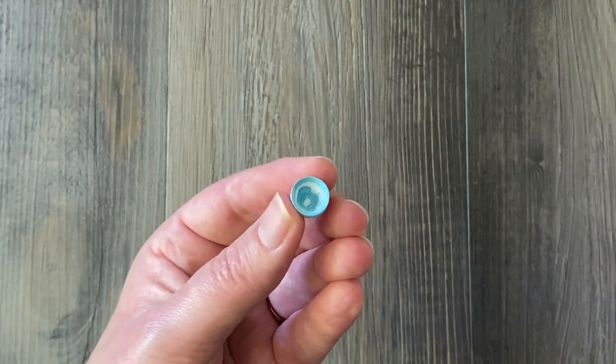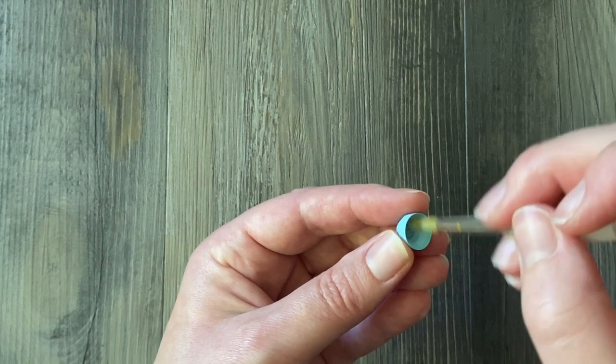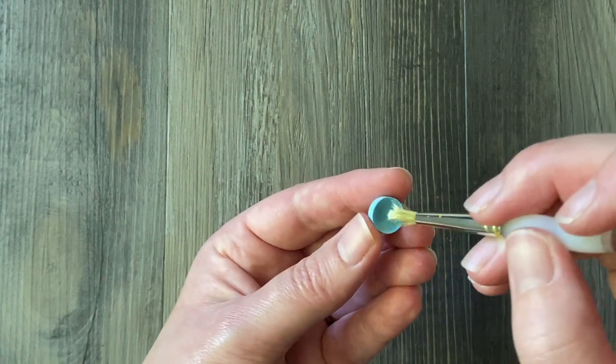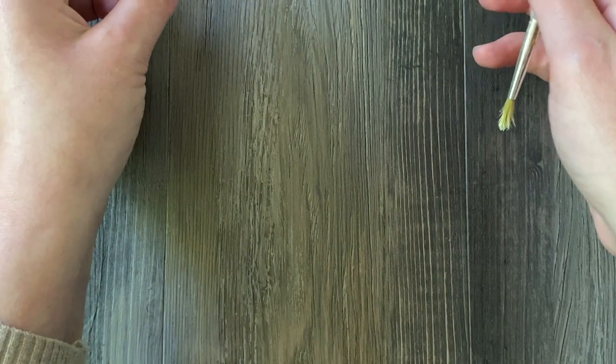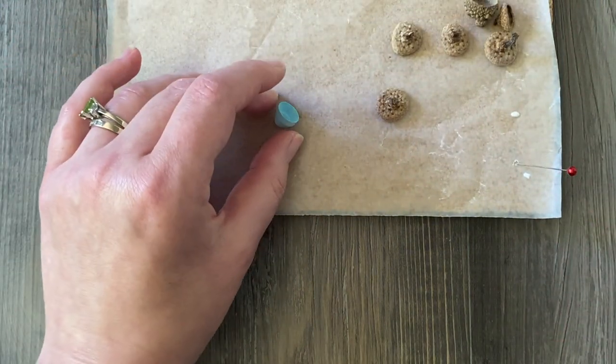And then to keep that shape, you're going to put some white glue on the inside, brush it all out so it's smooth, and set that aside on some wax paper to dry.